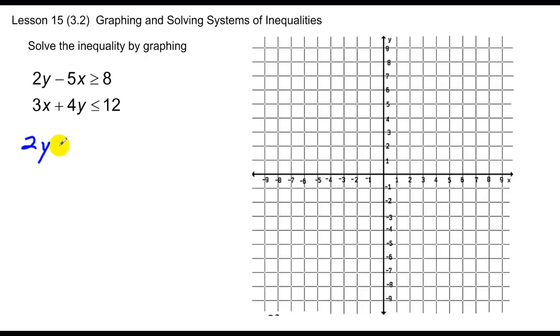I have 2y greater than or equal to 5x plus 8, divided by 2, y greater than or equal to 5 halves x plus 4. Other equation for y, less than or equal to negative 3x plus 12, y less than or equal to negative 3 fourths x plus 3.